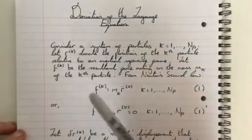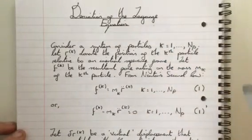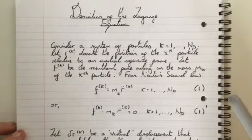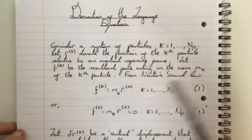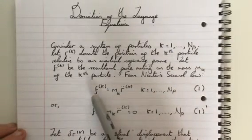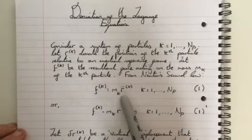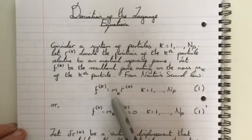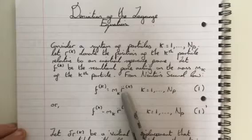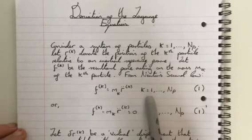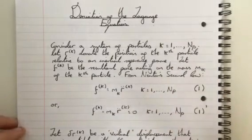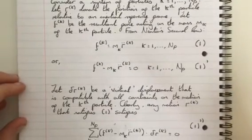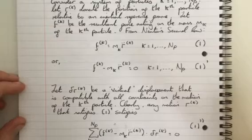So we're going to let Fk be the resultant force acting on the mass mk of the kth particle. From Newton's second law, we get the force is equal to mass times acceleration. The force on the kth particle is equal to the mass of the kth particle multiplied by the acceleration of the kth particle, as k equals 1 to mp. And we can rearrange it so it becomes F minus mk R double dot equals 0.